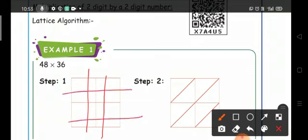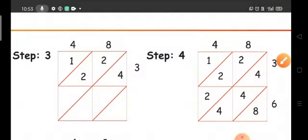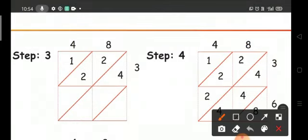Then draw a diagonal through each box from the upper right corner to the lower left corner. Write the multiplicand at the top and the multiplier on the side of the grid.